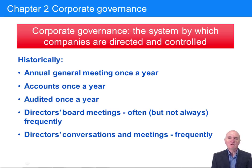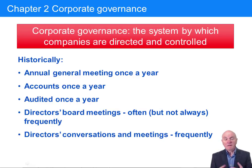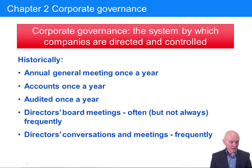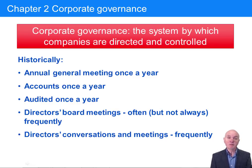Chapter 2 looks at corporate governance, which is a system by which companies are directed and controlled. Historically, the main way this corporate governance was enforced was that every year companies hold an annual general meeting, where all shareholders are entitled to attend, vote on resolutions, and perhaps appoint auditors or directors. At the AGM, financial statements would be presented and audited once a year.